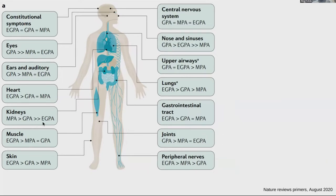If you have a patient who has pauci-immune necrotizing vasculitis with an RPGN picture and no other vasculitis involvement, the classification would be RLV — renal limited vasculitis. You wouldn't call it MPA. But if the patient has pericarditis from vasculitis rather than uremia, then the classification would change to MPA.